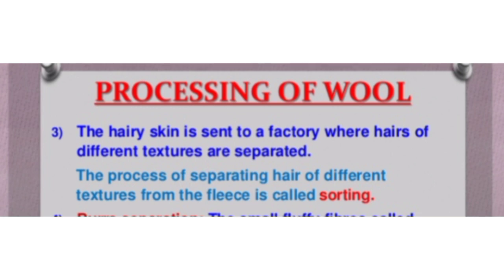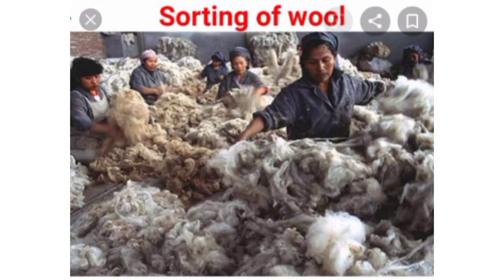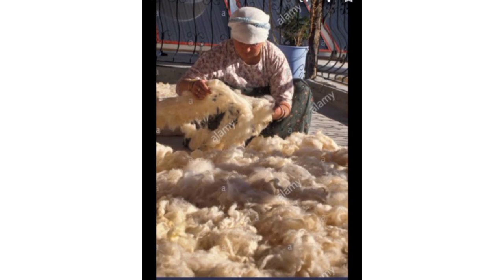After scouring, sorting is done. In sorting, the hairy skin is sent to a factory where hair of different textures are separated or sorted. The wools are separated according to their different textures - you can see how different types of textures are separated in this process.